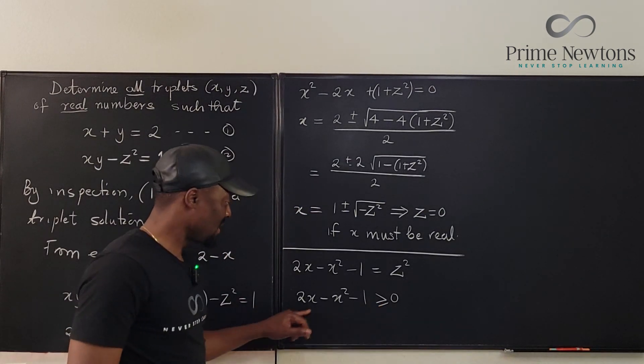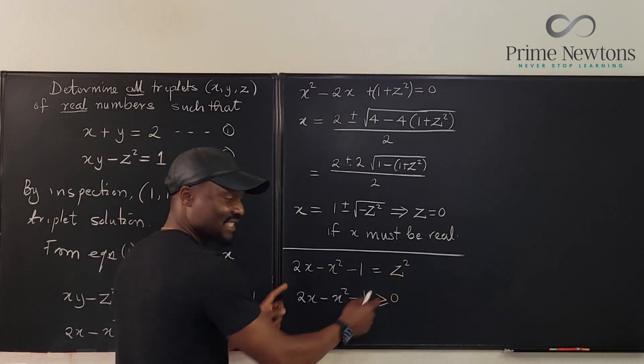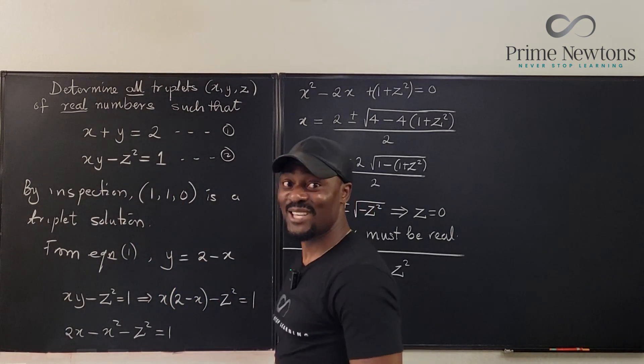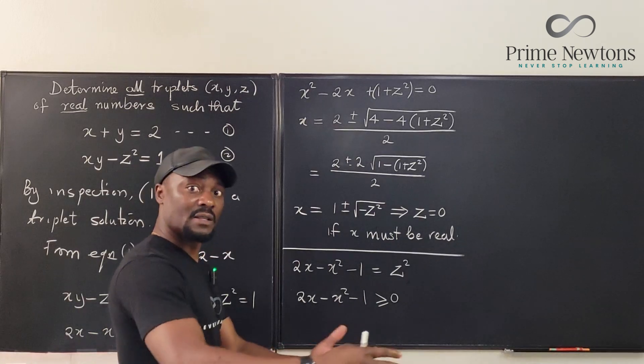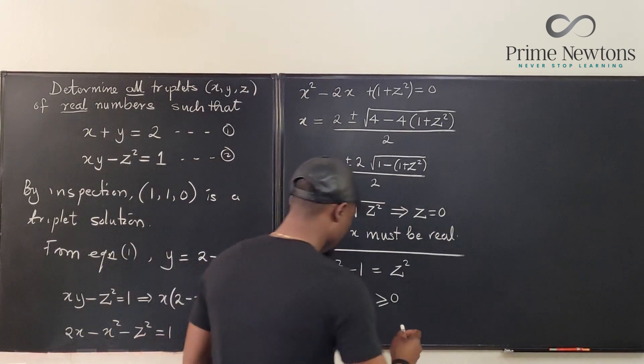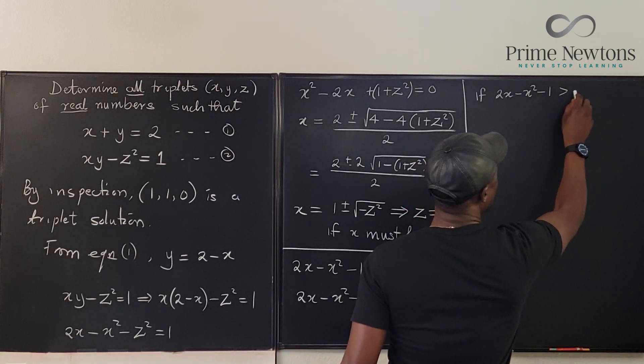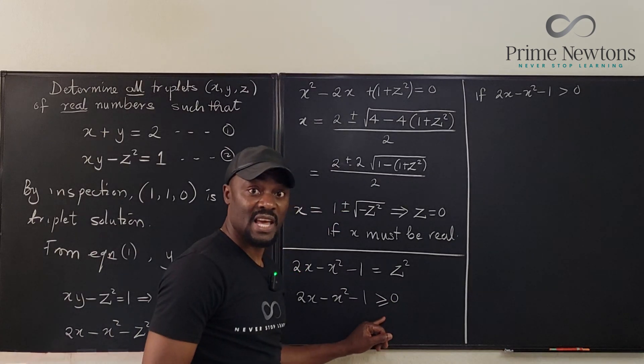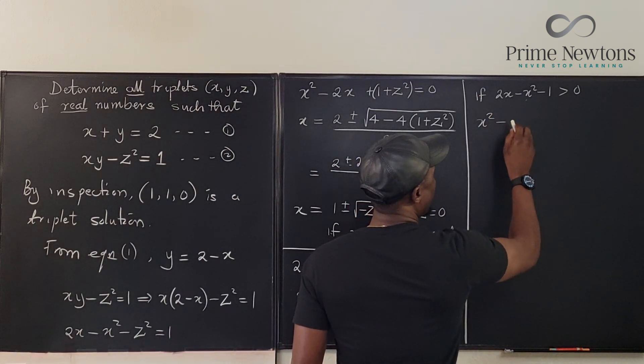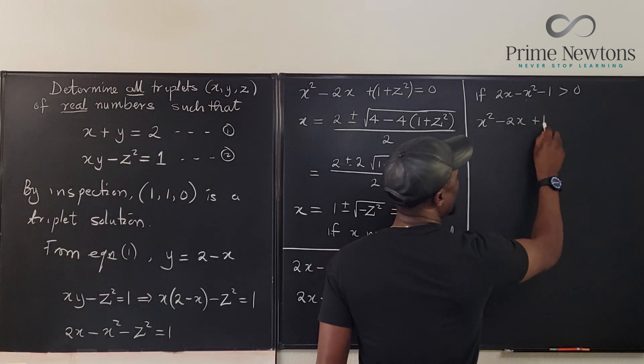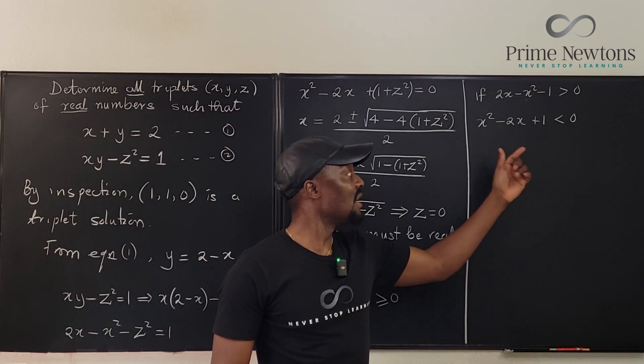We already established the case where this is equal to 0 when we solved this quadratic equation, and we said for this to be 0, z has to be 0. If this is 0, then z is 0, and that's still the case we got by inspection. So the second option is, let's assume that we're looking for it to be greater than 0. We're looking for other answers. So we're going to say that if 2x minus x squared minus 1 is greater than 0, we're doing strictly greater than 0 because we already established the case of z being equal to 0. We can multiply by negative 1 so that this becomes x squared minus 2x plus 1 will now be less than 0. What we have on the left has to be less than 0 because I've multiplied by minus 1.